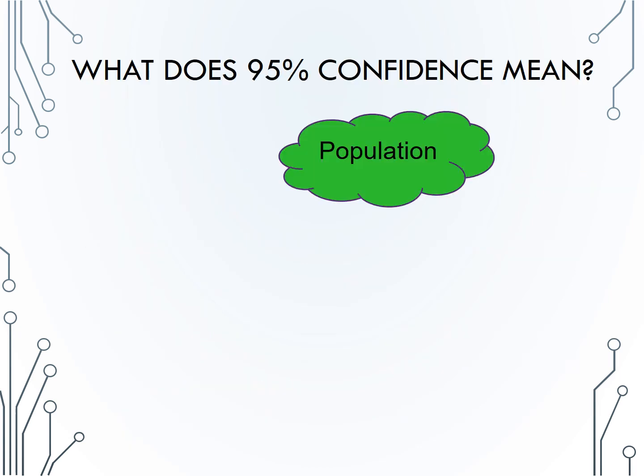How do we interpret our confidence level, or what does 95% confidence mean? Remember, the point of creating a confidence interval is to estimate a parameter. So we start with some population, and there's some unknown true mean mu.